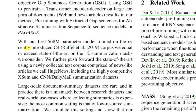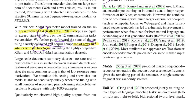They pre-trained their model on the C4 corpus and on a corpus of news-like articles called HugeNews. C4 stands for Colossal Clean Crawled Corpus, introduced in the T5 paper — it's a subset of Common Crawl after filtering such as removing URLs and keeping only English sentences, resulting in a 750 GB dataset. In related work, they compare their pre-training objective with MASS, UniLM, T5, and BART.